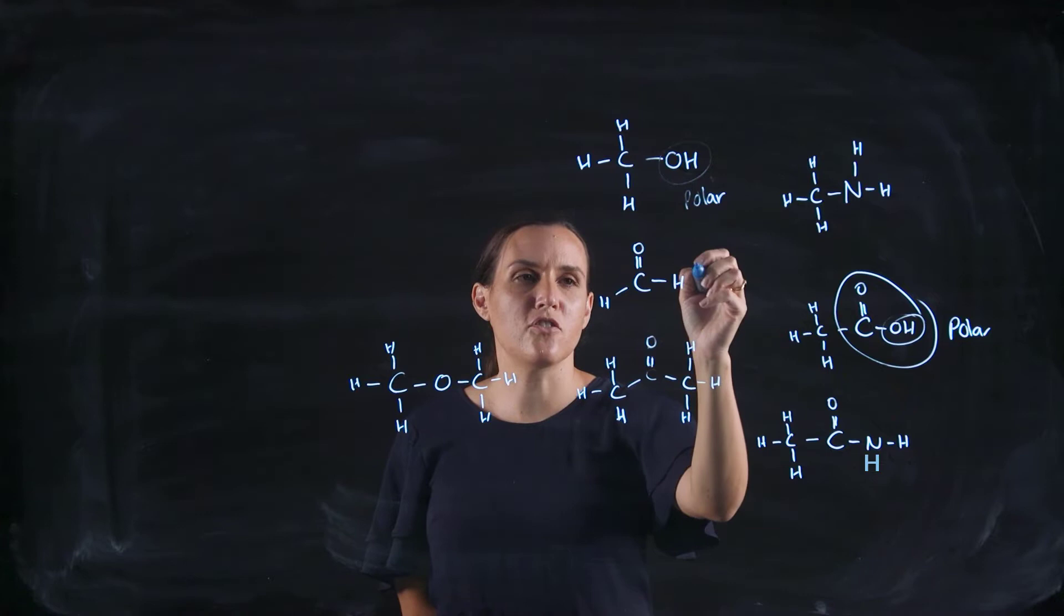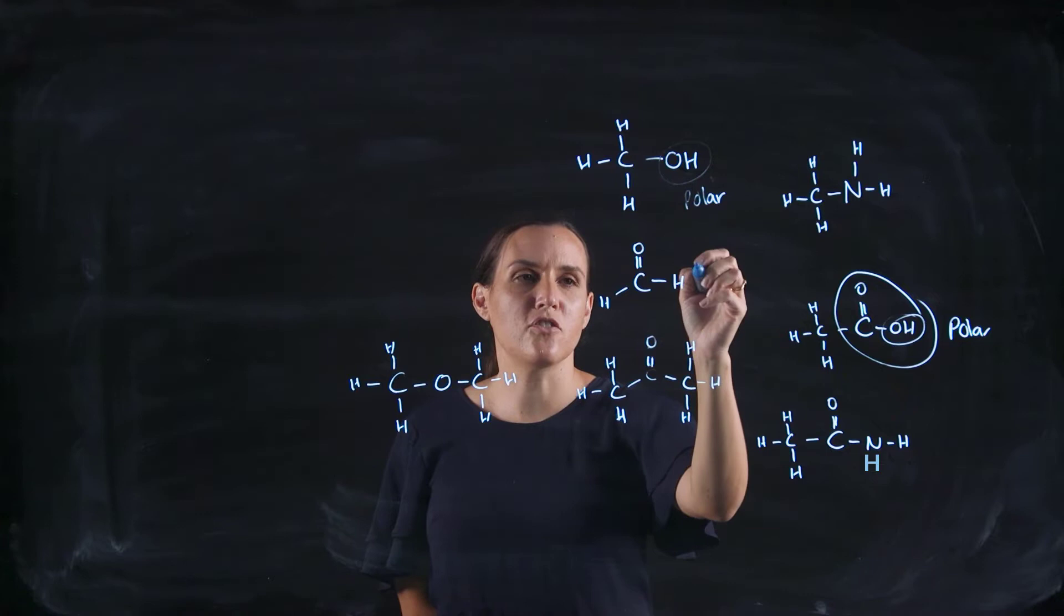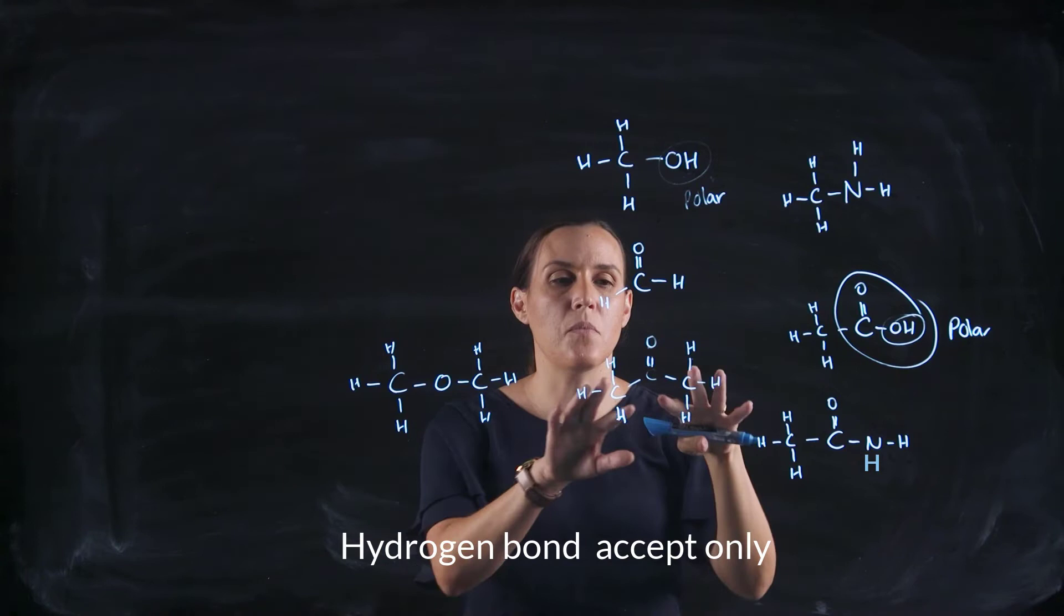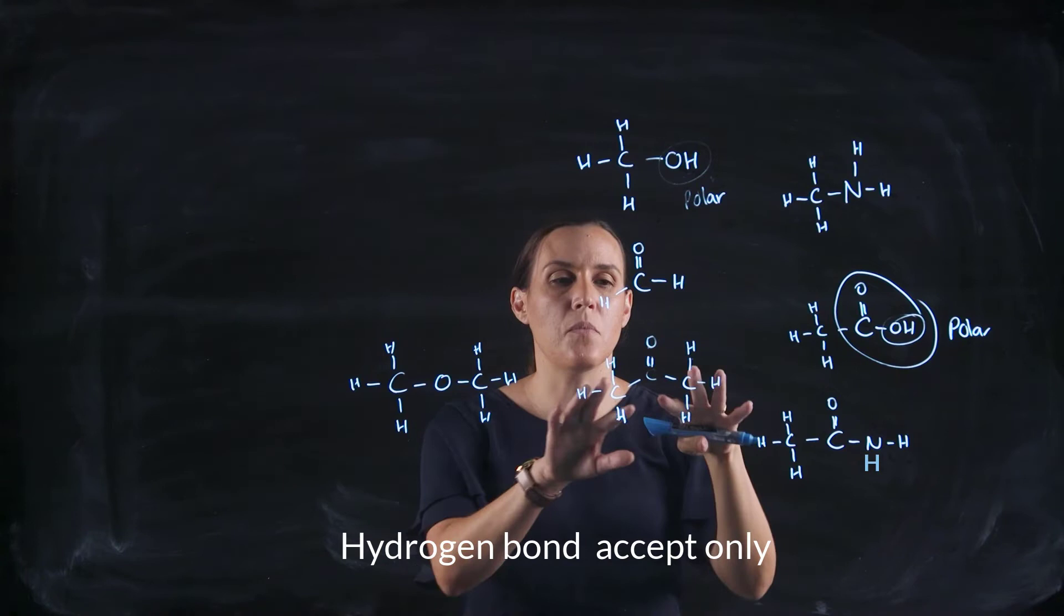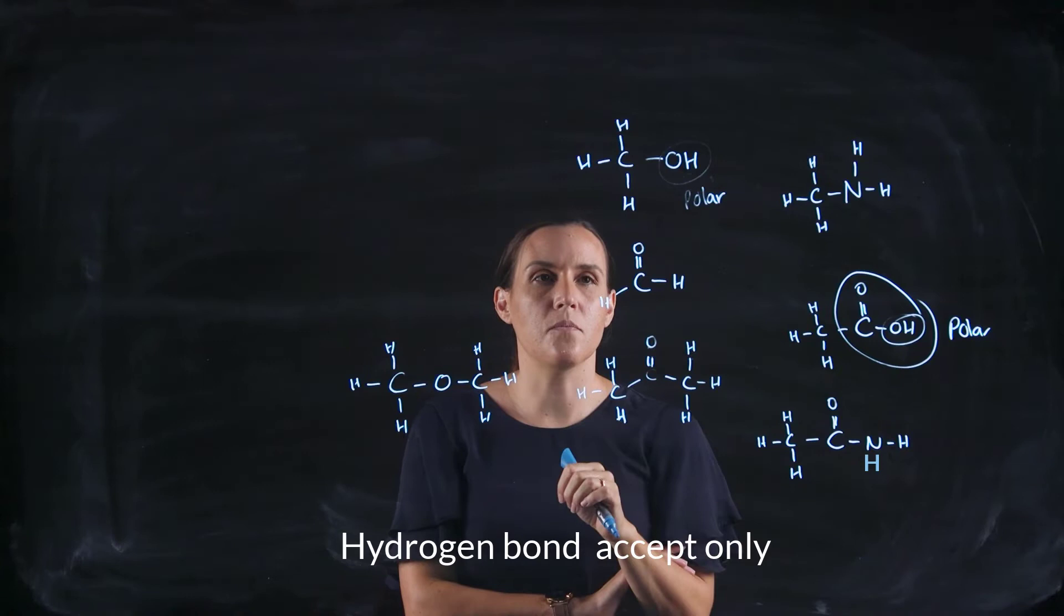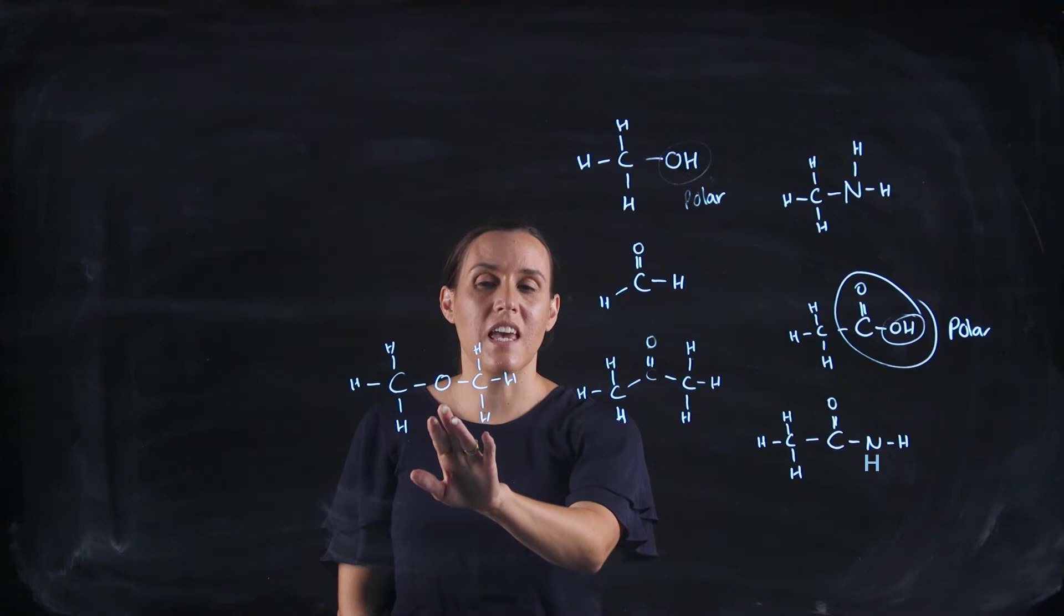The aldehyde is accessible—it can accept hydrogen bonds but it doesn't donate hydrogen bonds, so this is less polar. Your ketone is less polar than your aldehyde because it's hindered by the adjoining carbons depending on the structure. So there are a lot of other factors; these are just very simple drawings, but the oxygen can accept hydrogen bonds but it can't donate.